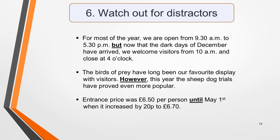The examiners may try to catch you out with distractors. A distractor is a word or phrase that changes or corrects the original piece of information given, so you may be given an answer and then have it taken away again. Here are some sample sentences containing distractors: For most of the year we are open from 9.30am to 5.30pm, but now that the dark days of December have arrived, we welcome visitors from 10am and close at 4 o'clock. The birds of prey have long been our favourite display with visitors; however, this year the sheepdog trials have proved even more popular. Entrance price was £6.50 per person until May 1st, when it increased by 20p to £6.70. The use of BUT and HOWEVER are particularly common distractors, but there are many different words and phrases that can be used to change or correct a piece of information, so be alert for them.